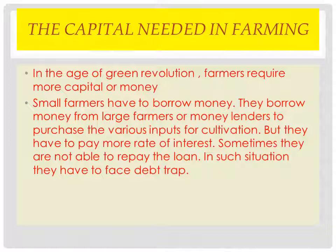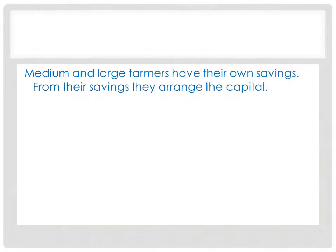For example, when any disaster occurs or climatic conditions are unfavorable, their crops fail. When the crops fail, they are unable to repay the loan and they have to face the problem of debt. Now, the second category of farmers is medium and large farmers.